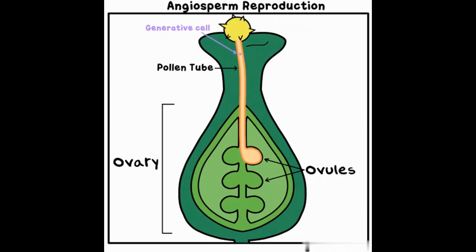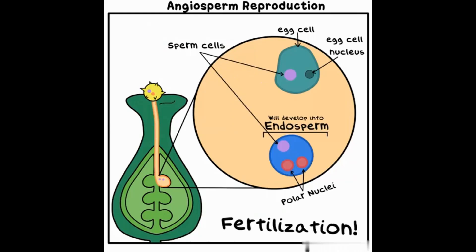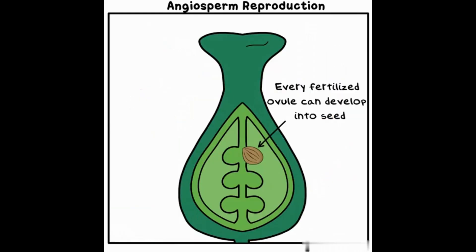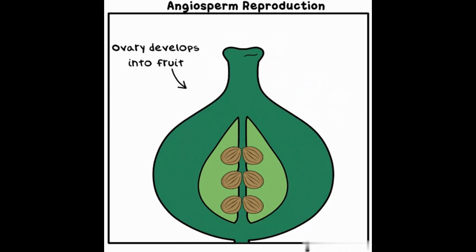Fertilization: the pollen tube delivers the sperm cells to the ovule inside the ovary. One sperm cell fuses with the egg cell, forming a zygote which develops into the embryo. The other sperm cell fuses with two polar nuclei in the ovule, forming a triploid cell which develops into the endosperm — a nutrient-rich tissue that nourishes the embryo.